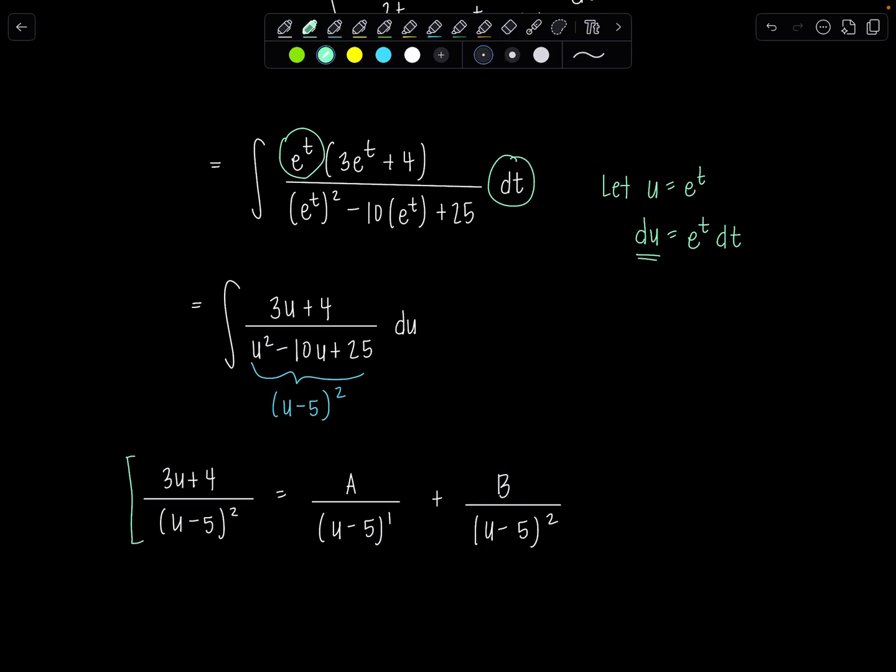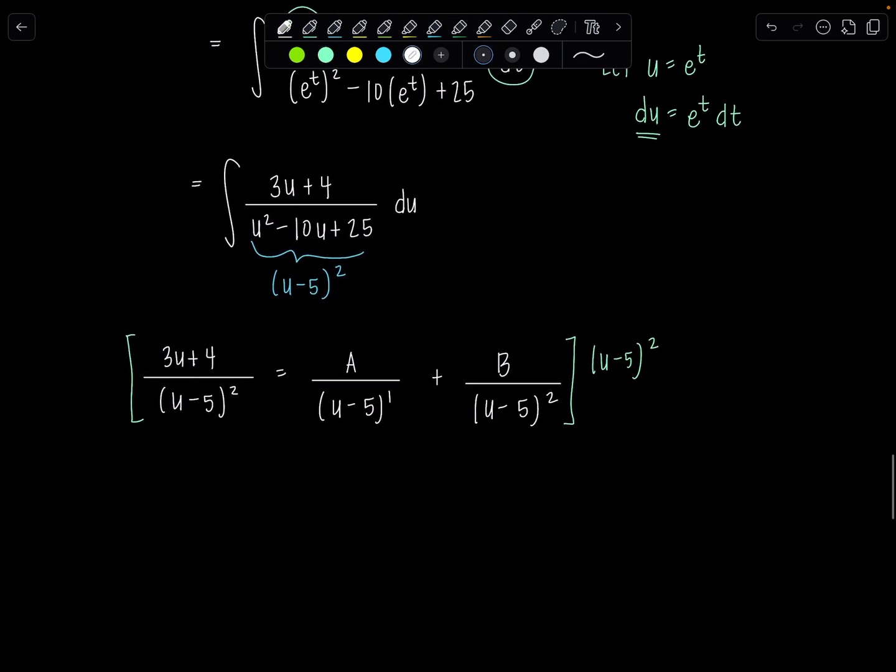Okay, lovely. Now multiply everything through by u minus 5 squared, and let's see what we have here.